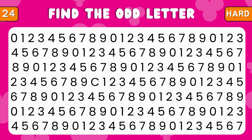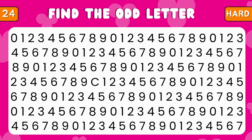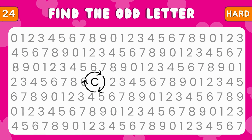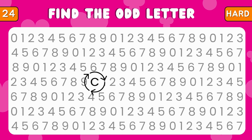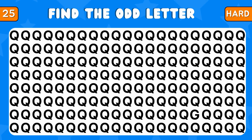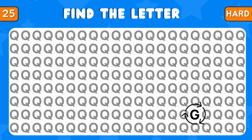Find the letter among lots of different numbers. The number 5 is hidden among these numbers. Letter C is hidden among these numbers. Find the odd letter. Here's the letter G.